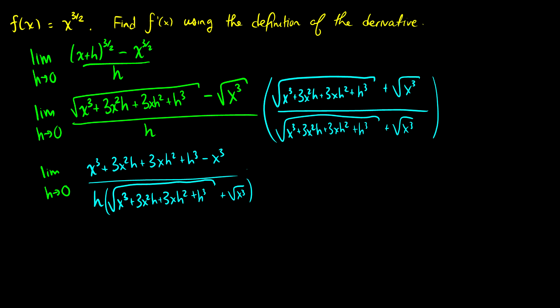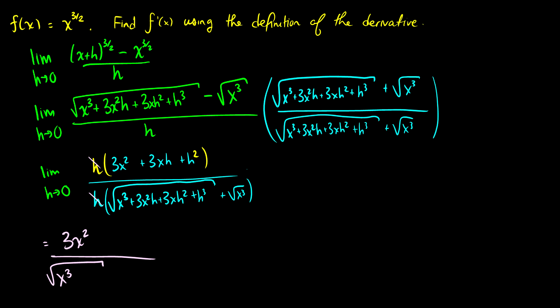On the top, x cubed minus x cubed cancels out. Then we can factor out an h from the remaining terms — this makes one term h, another h squared — and now we can cancel the h on top with the h on the bottom. Plugging in h equals zero on top gives 3x squared plus 0 plus 0, and on the bottom the square root of x cubed plus the square root of x cubed.